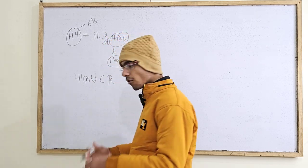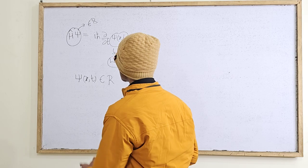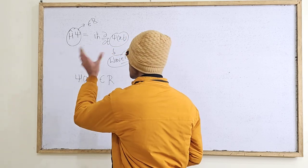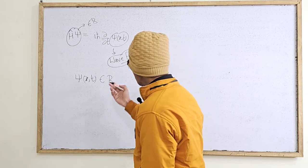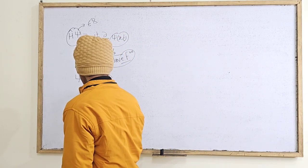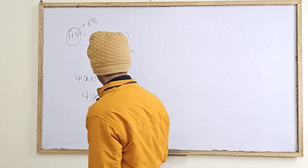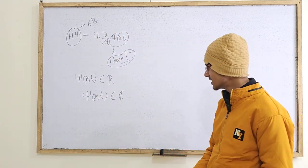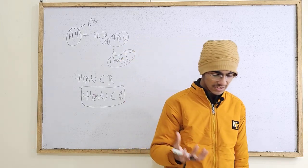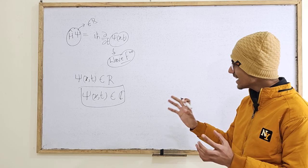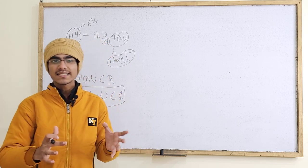So you get to know ki yeh dono sides of the equation ek dusre ke saath consistent nahi honge — ek term totally real hai, dusra term on the right-hand side totally imaginary hai. That means you cannot have the wave function as a real value or as a real dynamical variable. This is how we know ki hamara jo wave function hai, it actually belongs to the set of complex numbers — the complex world. And since the wave function is a complex number, you get a clear gist of why it doesn't have a physical significance or meaning behind it.